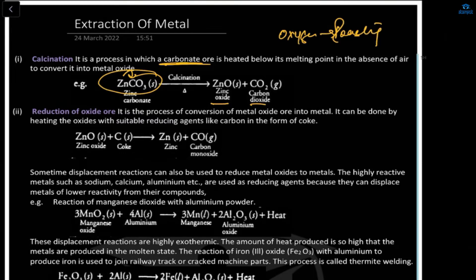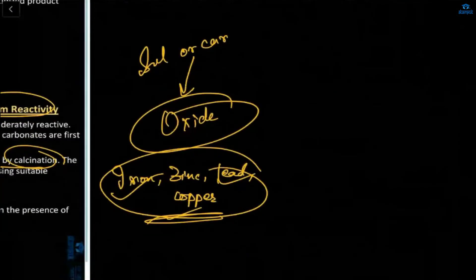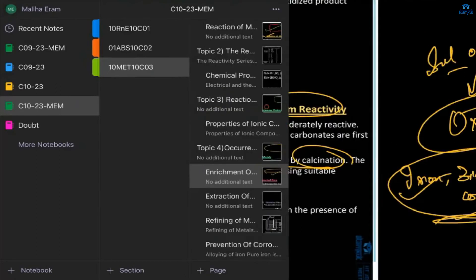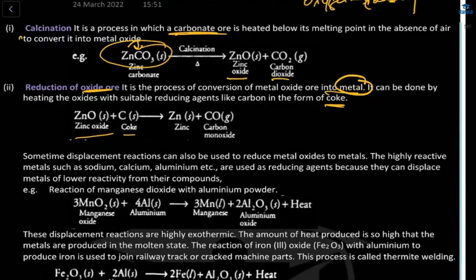Reduction of oxide ore is the process of converting metal oxide into metal. The oxide is reduced using a suitable reducing agent like carbon in the form of coke. For example, ZnO + C (coke) → Zn + CO (carbon monoxide). We must first convert sulfide or carbonate into oxide because reduction to metal is easier from oxide form.